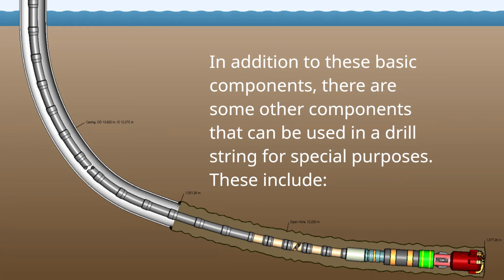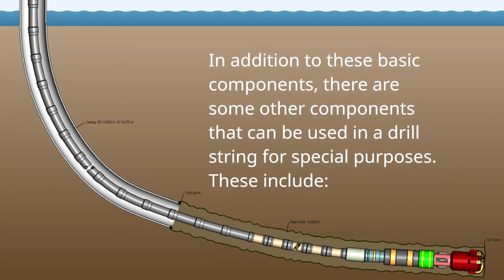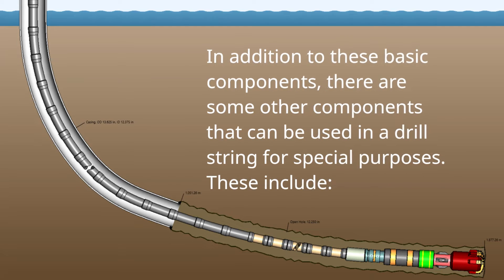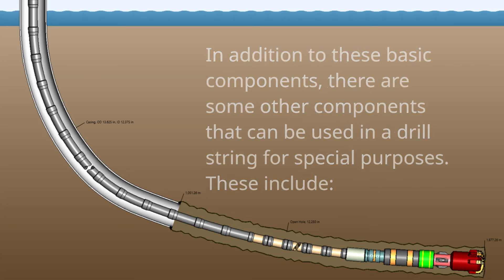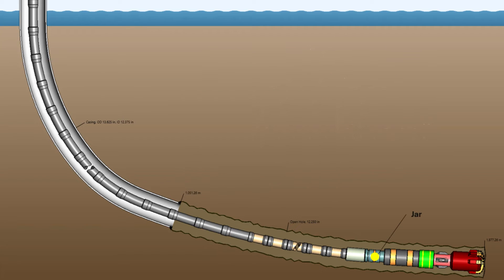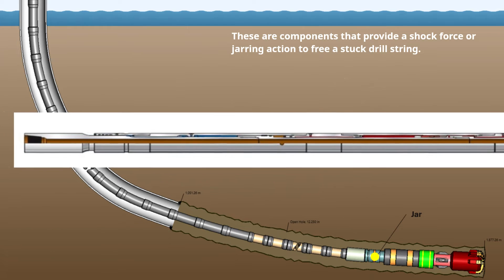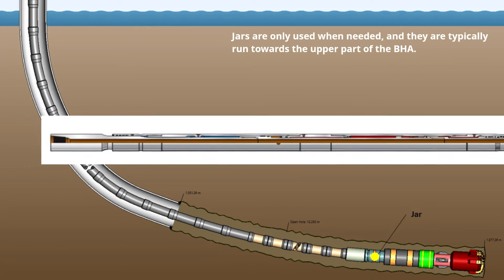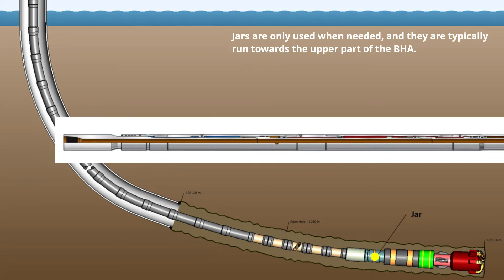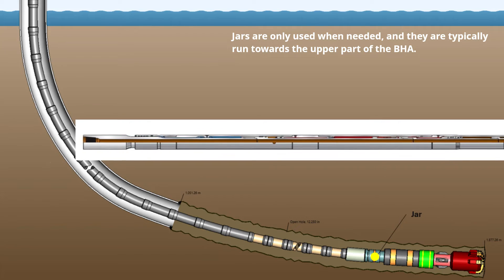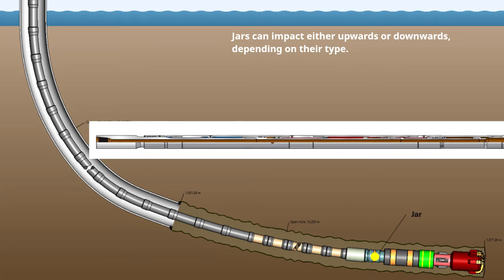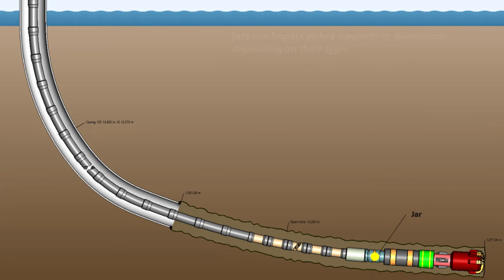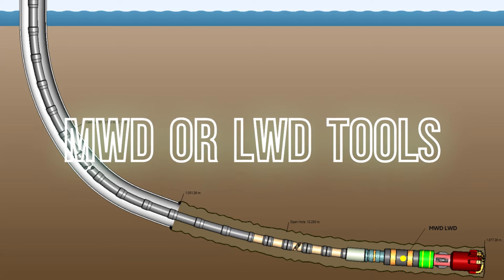In addition to these basic components, there are other components that can be used in a drill string for special purposes. These include jars, which are components that provide a shock force or jarring action to free a stuck drill string. Jars are only used when needed and are typically run towards the upper part of the BHA. Jars can impact either upwards or downwards depending on their type.